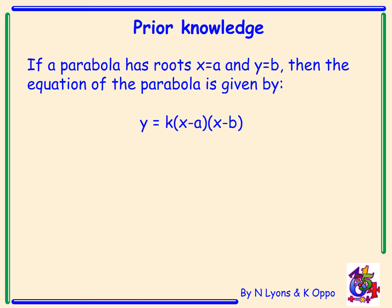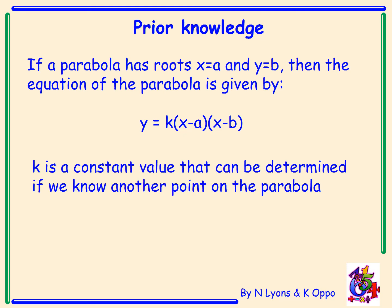Our prior knowledge: if a parabola has roots x equals a and x equals b, then the equation of the parabola is given by the general form y equals k times x minus a times x minus b. k is a constant value that can be determined if we know one other point on the parabola. You've seen this at National 5 level, and we'll extend it into something a little bit more tricky at a higher grade level.